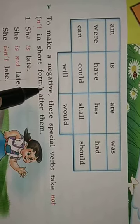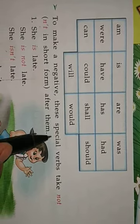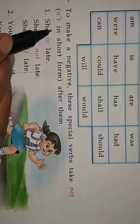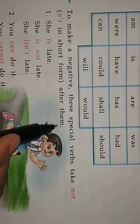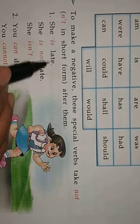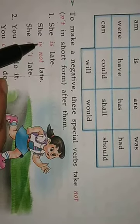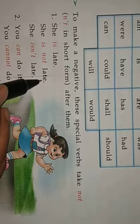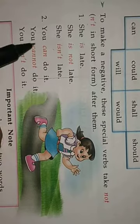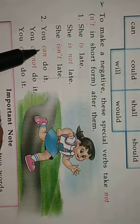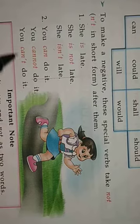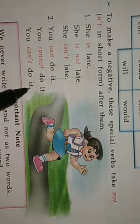Now, to make a negative, these special verbs take 'not' — and in short form — after them. Like: she is late. She is not late. She isn't late. You can do it. You cannot do it. You can't do it.